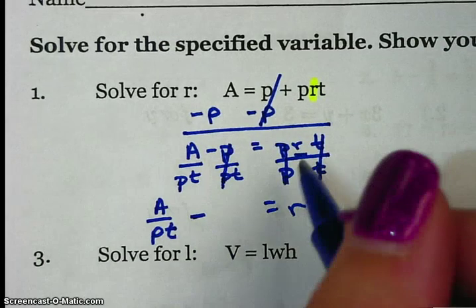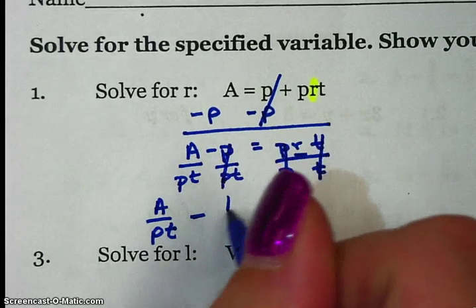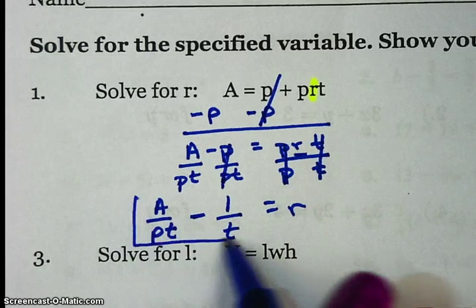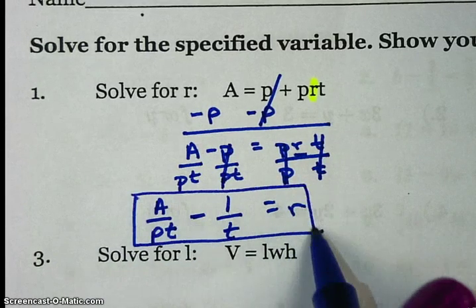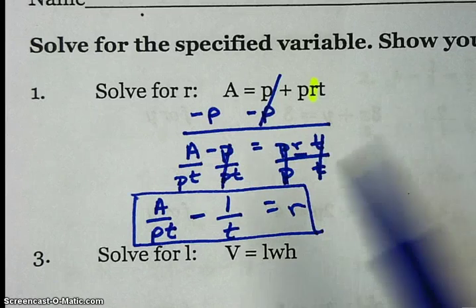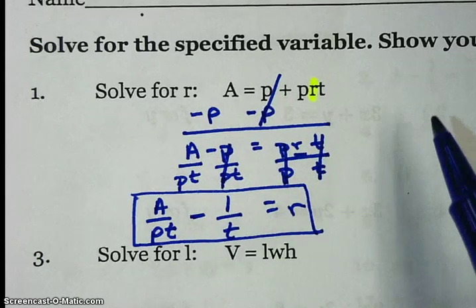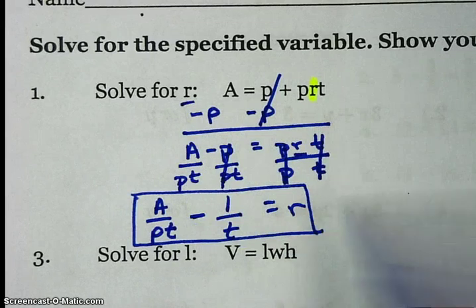These P's cancel out. So on top, I'm left with an understood 1, and the T is left on bottom. So this right here would be my rewritten formula: A over PT minus 1 over T equals R. They wanted me to solve for R, I got R.